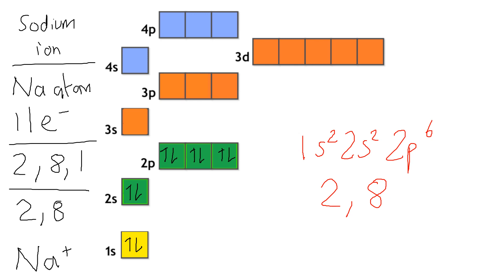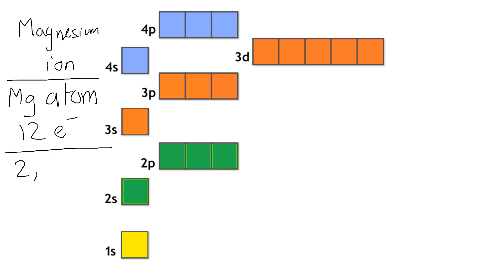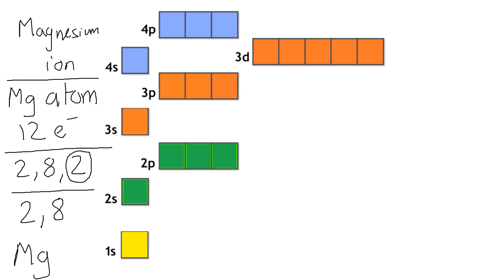The general pattern is that group 1 metals form 1+ ions — they lose their outer shell electron. Moving across to group 2, a magnesium atom has got 12 electrons, so its configuration would be 2, 8, 2. But magnesium loses the two outer shell electrons to give the configuration 2, 8, forming the Mg²⁺ ion. If we lose two negative electrons, we become two positive. So the SPD configuration of Mg²⁺ would be 1s2, 2s2, 2p6.